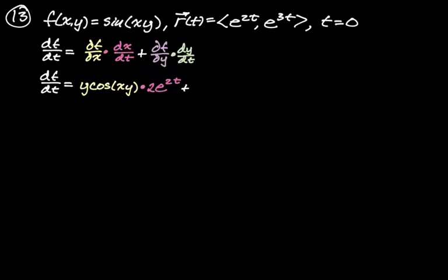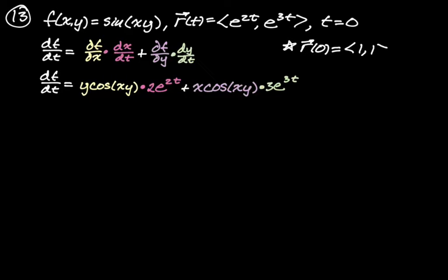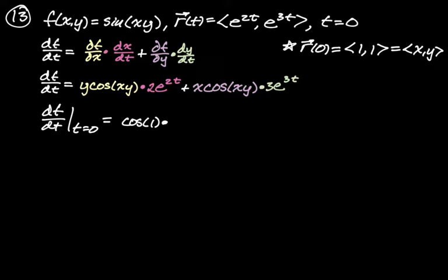Partial f partial y: the derivative of sin(xy) with respect to y is cos(xy) times x, giving x·cos(xy). And dy/dt: y = e^(3t), so dy/dt = 3e^(3t). Now substitute t = 0: r(0) = (e^0, e^0) = (1, 1), so x = 1, y = 1, t = 0. We get: 1·cos(1)·2·1 + 1·cos(1)·3·1 = 2cos(1) + 3cos(1) = 5cos(1).